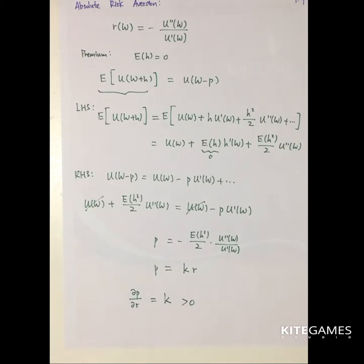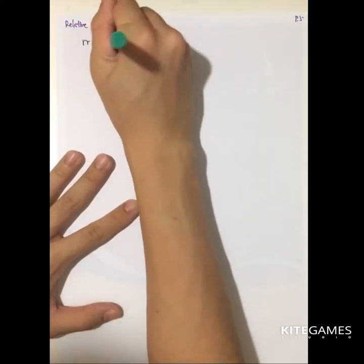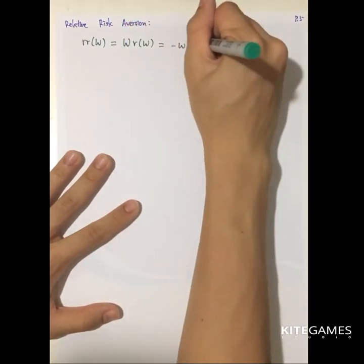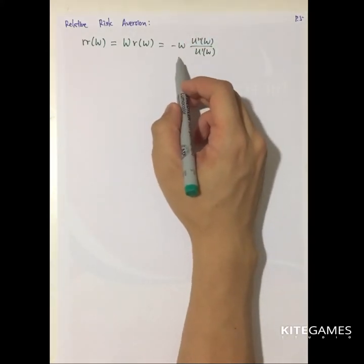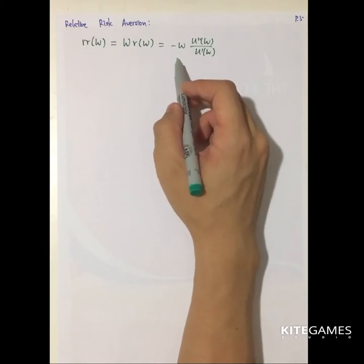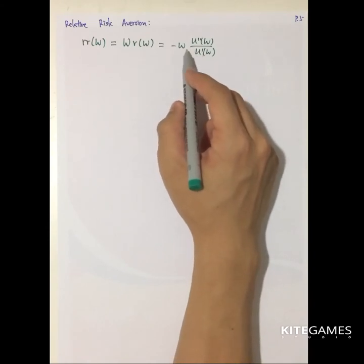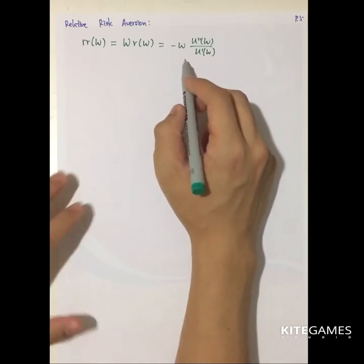Besides absolute risk aversion, we have relative risk aversion, defined as w times the absolute risk aversion: RR = −w·U''(w)/U'(w). The reason for multiplying by wealth is that we are not looking at absolute changes in wealth value; by including w, all changes in wealth are expressed as proportions.